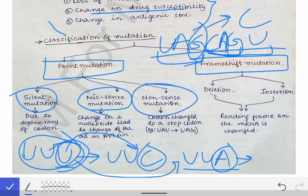Nonsense mutation is when the codon changes to a stop codon. For example, if codon UAU has its last nucleotide U changed to G, it becomes UAG, which is a stop codon. This means protein synthesis will stop at that point. Because it causes stoppage of protein synthesis — a nonsense phenomenon — it is called a nonsense mutation.